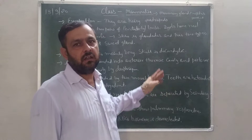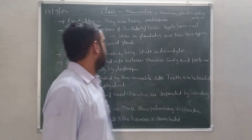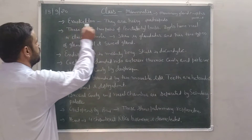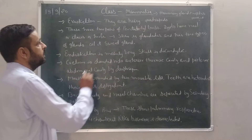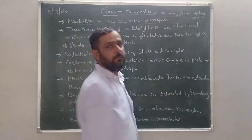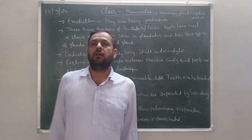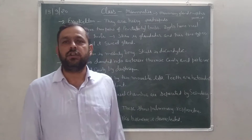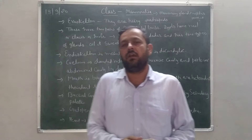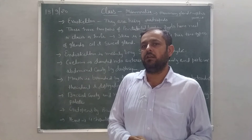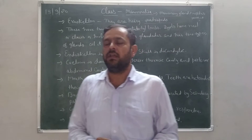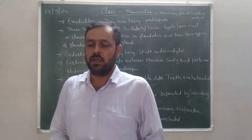Here are some characters of Mammalia. First, exoskeleton: they are hairy tetrapoda, meaning the exoskeleton is present on the skin in the form of hair.